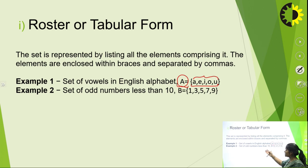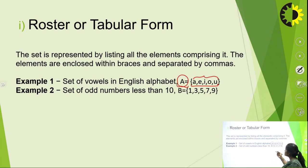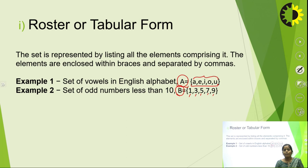Another example: the set of odd numbers less than 10. Odd numbers are those not divisible by 2. So the odd natural numbers less than 10 are 1, 3, 5, 7, and 9, represented as set B = {1, 3, 5, 7, 9}. This type of representation is tabular or roster form.